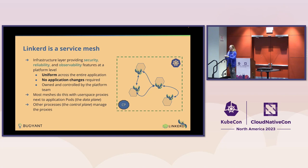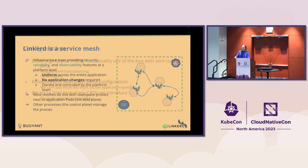Gamma is a backronym — Gateway API for Mesh Management and Administration. I couldn't remember it, so I was looking at Mike and Rob because they might remember this. Gateway API for Mesh Management and Administration — Gamma. Props to Mike Morris.